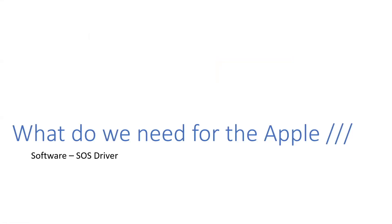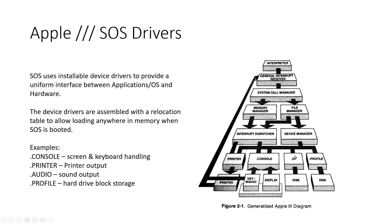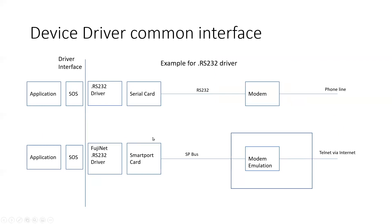From a software perspective, we need a SOS driver. Apple 3 uses drivers to isolate devices from the OS through a common interface — examples include console, printer, audio, and profile drivers. The original setup had a physical serial card, RS-232 connection, external modem, and phone line. With FujiNet, we have its driver talking to SmartPort, modem emulation in the FujiNet, and then the internet. As long as we have this common interface, the application shouldn't care which one it's using.